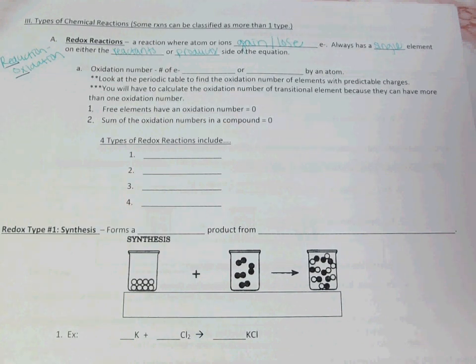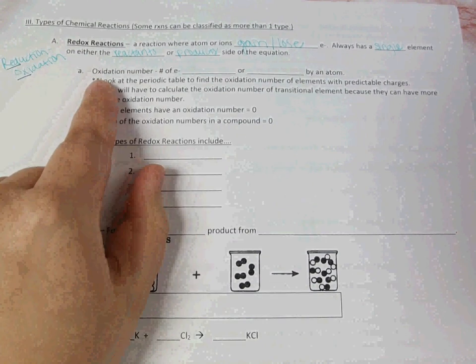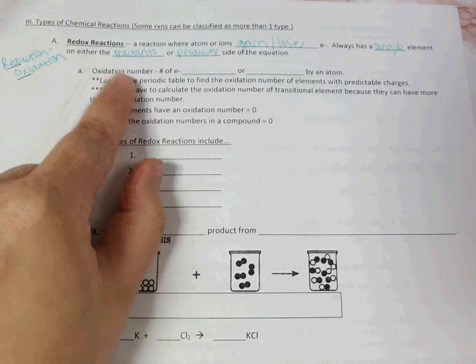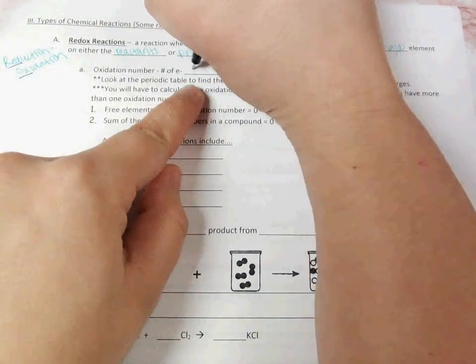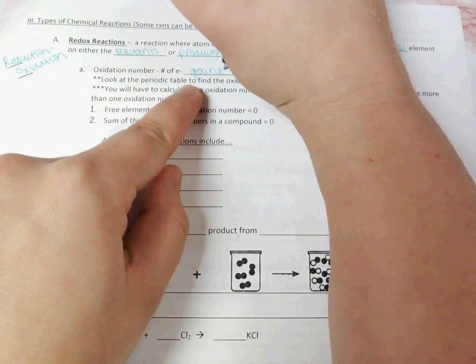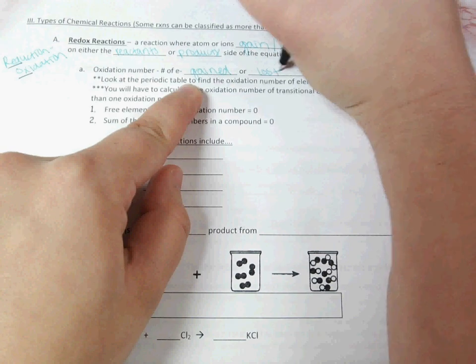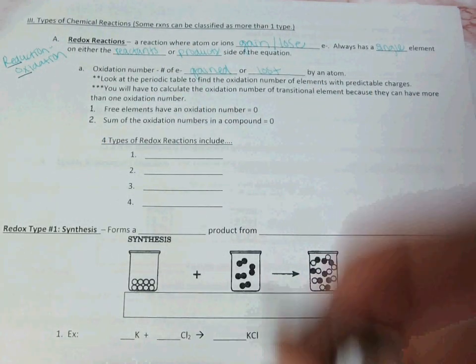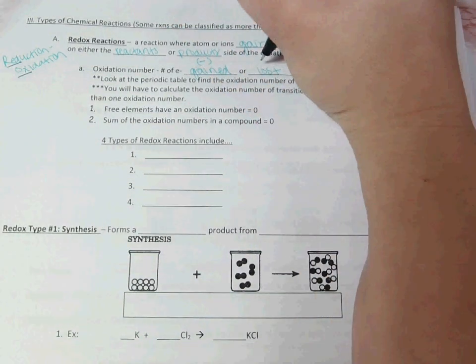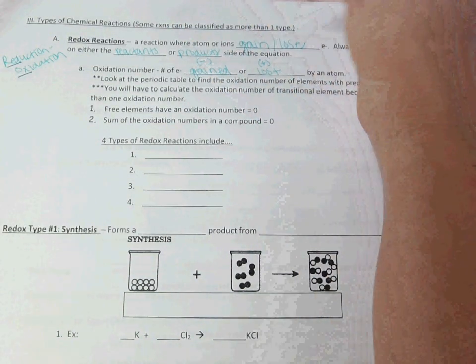Remember that from our periodic tables, we've been labeling oxidation numbers all year long. We refer to those as their charges. This comes from the number of electrons either gained or lost by an atom. If you gain electrons, you end up with a negative charge, and if you lose electrons, you end up with a positive charge.